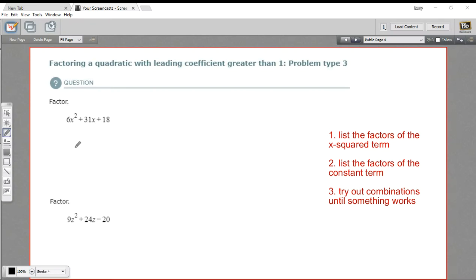In these problems, we are factoring quadratic expressions that have leading coefficients, so this number multiplied by the squared term, that are bigger than 1. As long as these numbers, the leading coefficient and your constant term, aren't huge, I think the easiest way to do this is to list the factors of that leading coefficient, list the factors of your constant term, and then try to fit them in the factored form and use FOIL to see if they work out, to see if they get that middle term. Let me show you how this works.